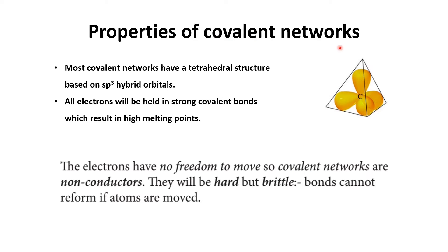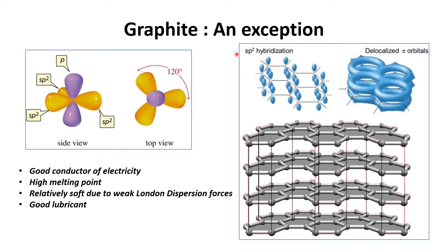Now let's see the properties of covalent networks. Three out of four of the compounds shown have a tetrahedral structure, so most covalent networks have a tetrahedral structure based on sp³ hybrid orbitals. In the tetrahedral structure, all electrons are held in strong covalent bonds, which results in a high melting point. As the electrons are held strongly they cannot move, making covalent network compounds non-conductors. Another property is that they are hard but brittle, because once broken they cannot reform.